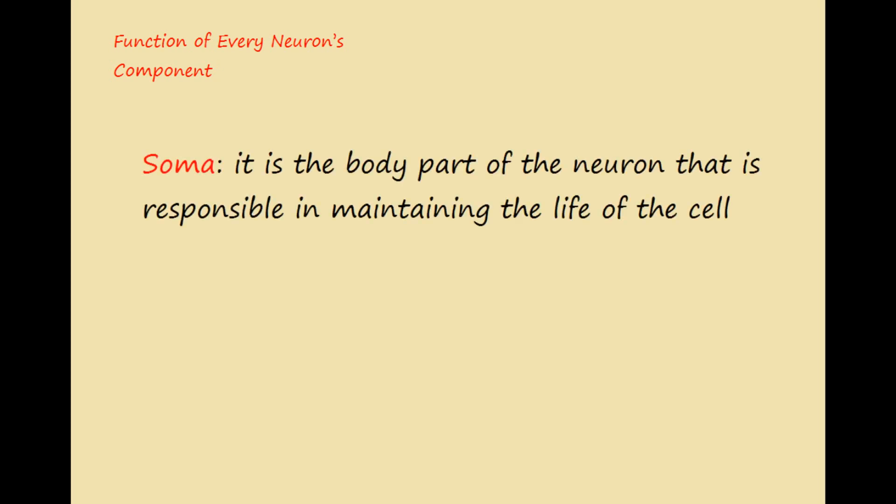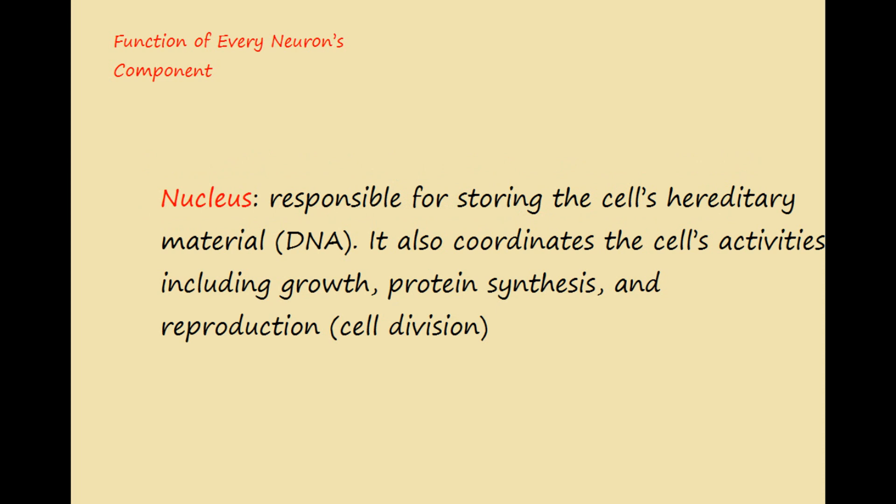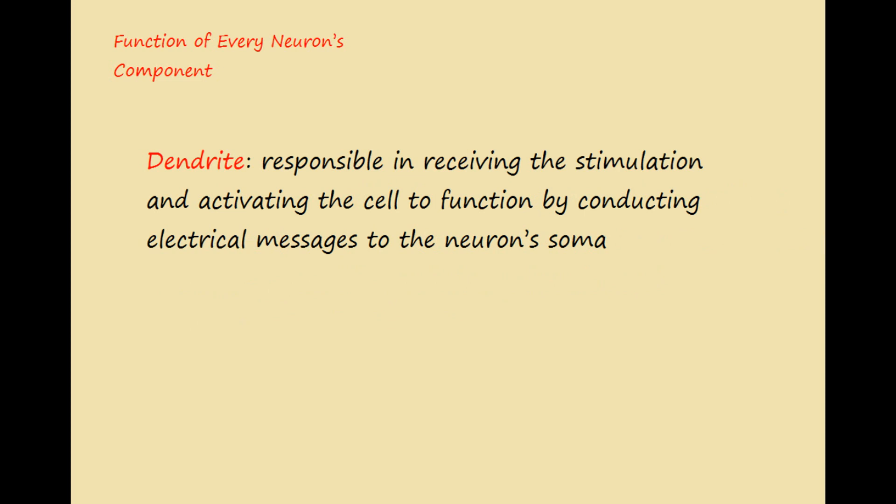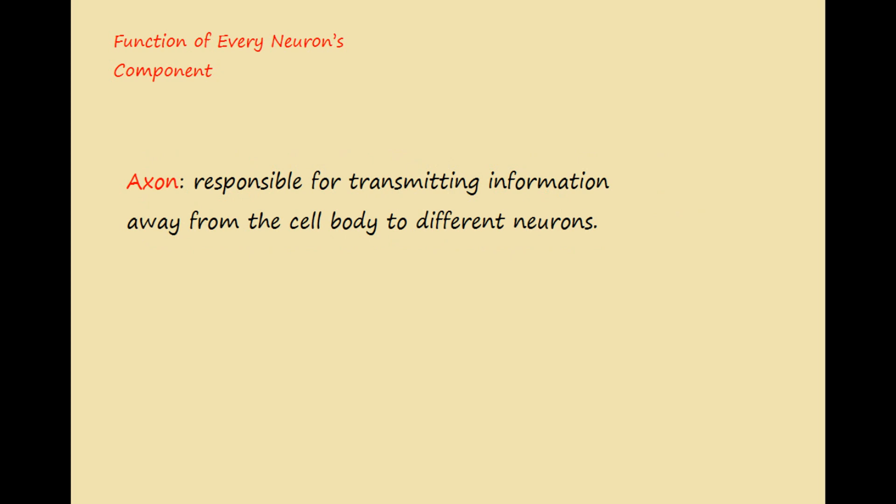Now, the function of each neuron component: The soma is responsible for maintaining the life of the cell — without it, the cell would die. The nucleus stores the cell's hereditary material, the DNA, and coordinates the cell's activities including growth, protein synthesis, and reproduction. The dendrite receives stimulation and activates the cell by conducting electrical messages to the neuron's soma. The axon transmits information away from the cell body to different neurons — not just one, but many at the same time.